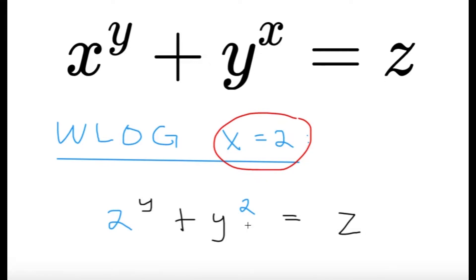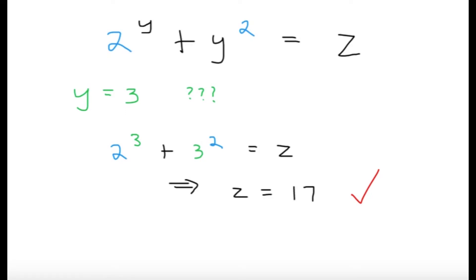Alright, so we have 2 raised to y plus y squared equal to z. Now, at this point, you would try to substitute some values and it would be a logical way to continue this item by trying some values of y. Now, if you try y equals 3, 2 raised to 3 plus 3 squared. 2 cubed here is 8, 3 squared is 9, and 8 plus 9 gives 17. And z is equal to 17, and that's prime.